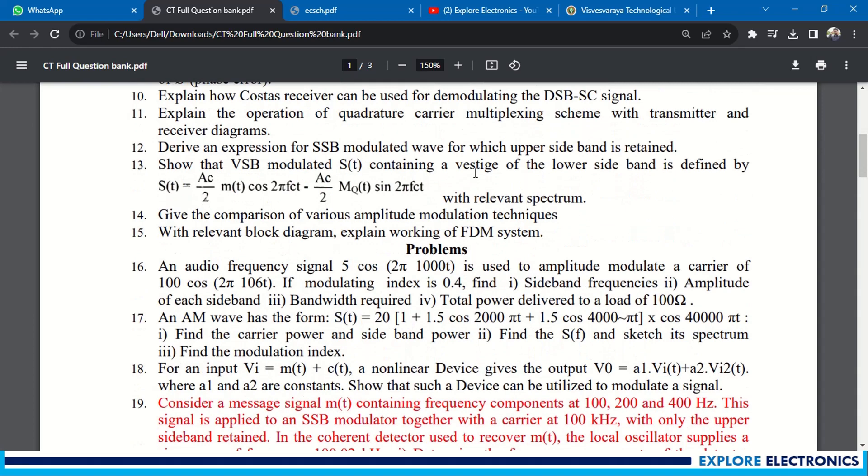Also derive the single sideband modulated wave for which upper sideband is retained. Show that VSB modulated S(t) carrying the vestige of the lower sideband is defined by this with relevant spectrum. Give the comparison of various amplitude modulation techniques which is discussed in this module, and with relevant block diagram explain the working of FDM system.